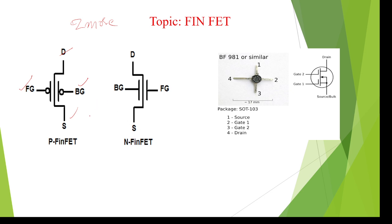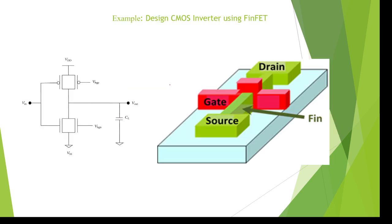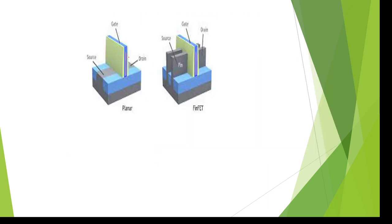This is for P-type and this is an N-MOS. This is after the fabrication process. We can also draw the symbols for that. Coming to the fabrication — here we can see the advantages. Normal FET, if you take, is like a planar chip. But if you take a FinFET, FinFET is like a fin chip.